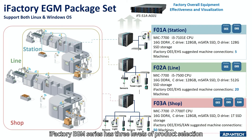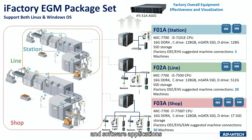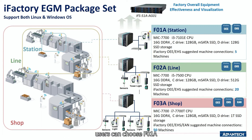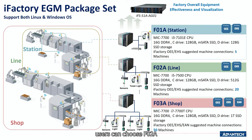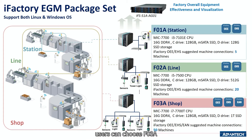iFactory EGM series has three levels of product selection corresponding to different hardware levels and software applications. For fields with less than 5 machines in a single station, users can choose 501A. For a single production line with 5 to 20 machines, users can choose 502A. And for multiple production lines with 20 to 50 machines, users can choose 503A.